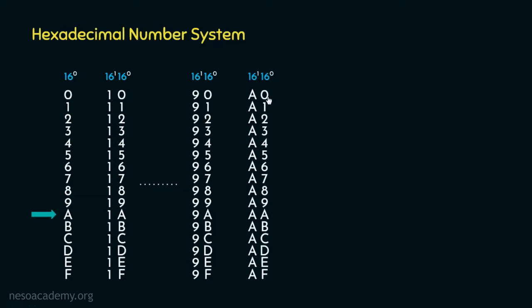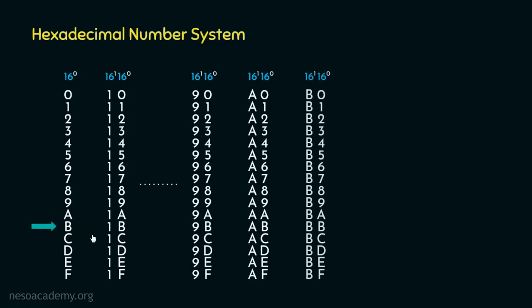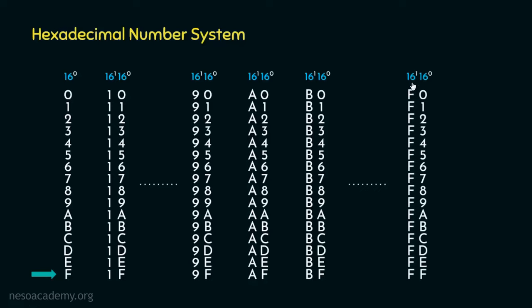So the numbers after 9F will be A0, A1, A2 through AF. After AF, we select the next symbol B for the 16¹ place, forming 16 new numbers with B as the most significant digit. Eventually we reach F for the 16¹ place and 16 new numbers are formed with F as the most significant digit. At this point, we have exhausted all symbols in these two places. So to form the next number, we introduce a new place with place value 16 squared. After FF, the next number is formed by placing 1 in the 16² place while these two places reset to zero. This is how the hexadecimal number system works.